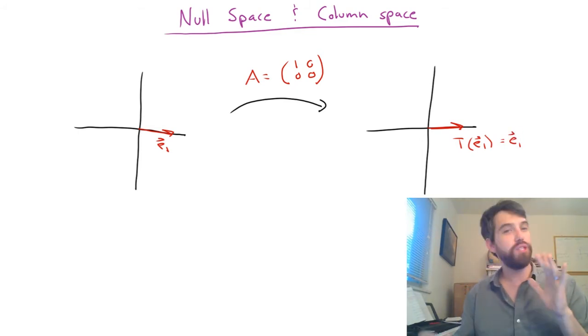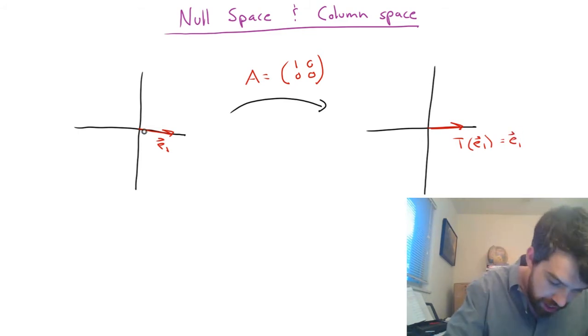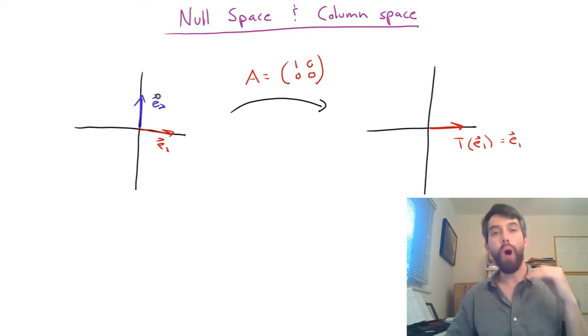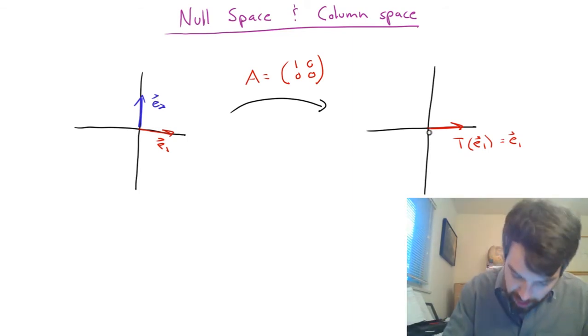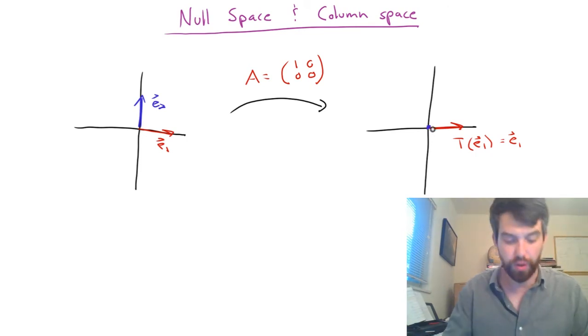However, this is not true for the E2. So the E2, which sits right up here, this is the vector 0, 1. If I apply my matrix to that, it goes to the 0 vector. So I don't know how to draw this, but maybe I'll just draw a circular dot right down here at the origin.